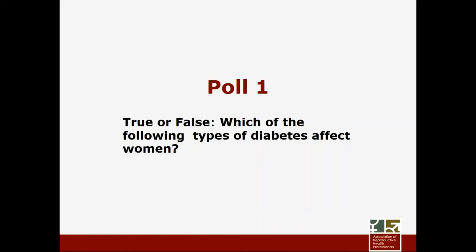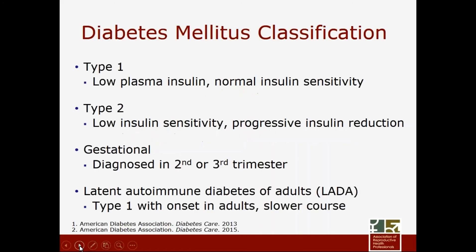We have a quick question: which of the following types of diabetes can affect women? The answer is that women can be affected by all types. Type 1 diabetes is where the pancreas is not functioning well and plasma insulin is either low or non-existent, but the body retains normal insulin sensitivity. If we replace the insulin, these people have what they need to function. These are the people who can't take oral medications but rather require injectable insulin to control their sugars.